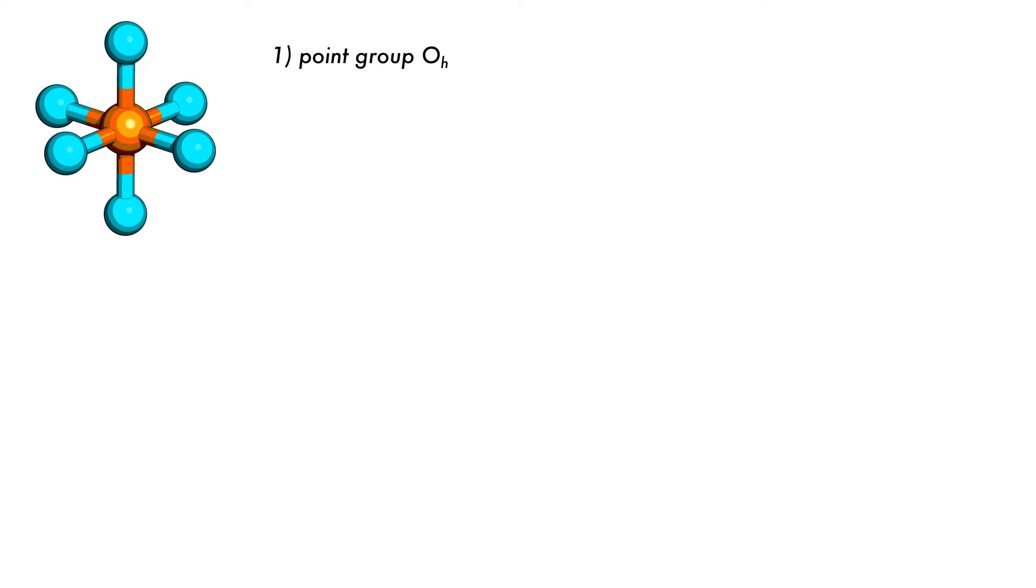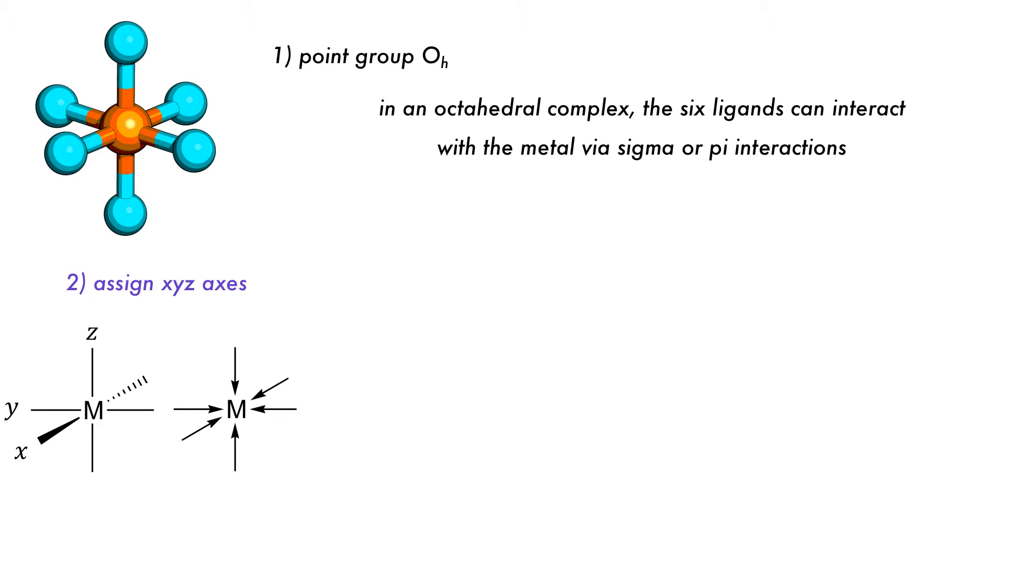The most important single transition metal complex is the octahedral metal complex, with an orange metal atom in the center surrounded by six ligand groups attached to it with the Oh high symmetry point group. In this case, only the sigma bonding interactions will be considered, but pi and delta bonding is also possible. The six bond vectors from the ligands to the metal are defined as shown and are simply sigma bonds.